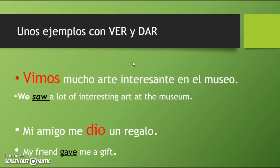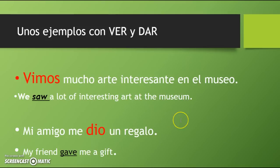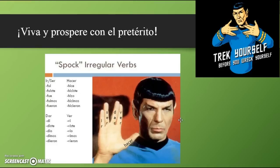Para terminar, tenemos unos ejemplos con ver y dar. 'Vimos mucho arte interesante en el museo.' — We saw lots of interesting art at the museum. 'Mi amigo me dio un regalo.' — My friend gave me a gift, using our indirect object pronouns. Dio, en el pretérito. Excelente.